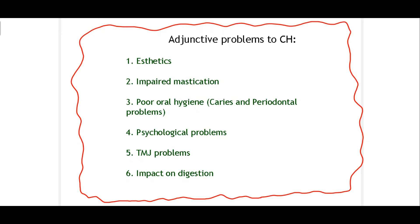Patients with condylar hyperplasia face several associated problems. There are aesthetic issues visible clinically. Their occlusion is affected, leading to open bite, lateral crossbite, and protrusion of teeth — all impairing mastication. Impaired mastication and poor aesthetics lead to poor oral hygiene, predisposing patients to caries and periodontal problems. Impaired aesthetics and functional disturbances further lead to psychological problems. TMJ problems and impaired digestion due to poor diet also result from this condition.